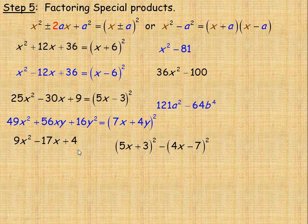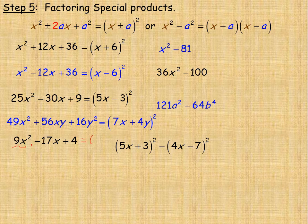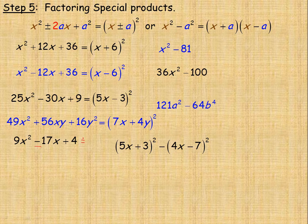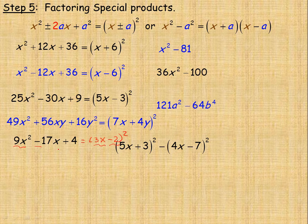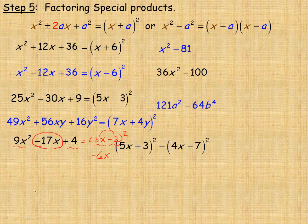One more here. It starts with a perfect square and ends with a perfect square. So if this could be factored, what we square to get 9x squared is 3x, and what we square to get 4 is 2. There's a minus in the middle, so it would be 3x minus 2 squared. But it doesn't check: 3x times negative 2 is negative 6x, and if you double that you get negative 12x, not negative 17x. So even though it starts and ends with a perfect square, you have to check that the middle term works — and it doesn't here. So that is not 3x minus 2 squared.